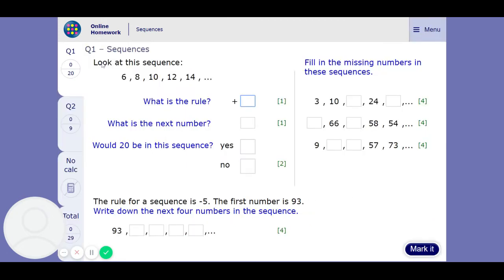First question: look at the sequence 6, 8, 10, 12, 14, what is the rule? Plus something. So it's fairly easy to see I think that it's going up in twos. So the rule is going to be plus two.